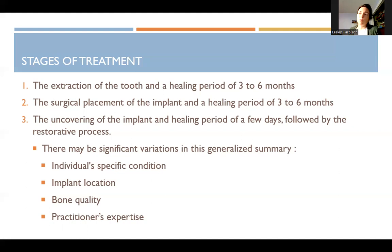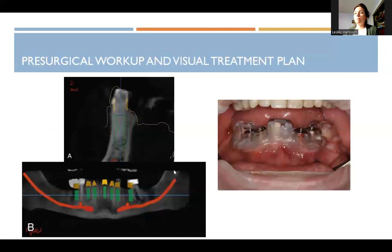Then they uncover the implant. They can either leave it with a healing abutment — so the top is exposed with a flat healing abutment — or they cover the implant completely and then punch through the tissue when they're ready to put an abutment and crown on it. There may be significant variations based on individual conditions, implant location, bone quality, and the practitioner's expertise.